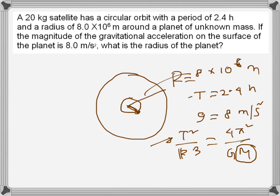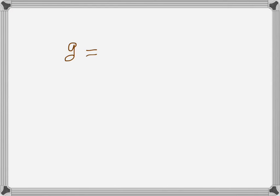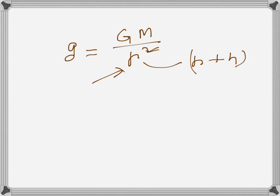Now we need to find the radius of the planet, lowercase r. We use the equation g = G·M / r², where g is the gravitational acceleration on the surface. At the surface, r is the radius of the planet — the distance from the center to the surface.